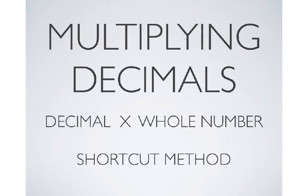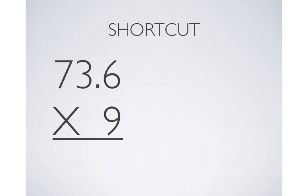Of course, there is a shortcut method to multiplying decimals. And I'll show you that now. In the shortcut method, you don't make an estimate of your answer. You just ignore the decimal point and multiply the numbers.